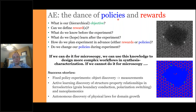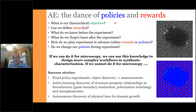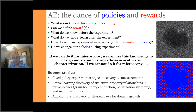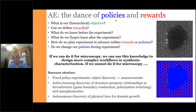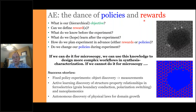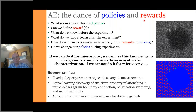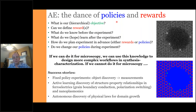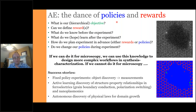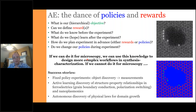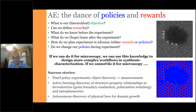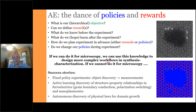Our planning of the automated experiment becomes a dance between policies and rewards. Rewards are what we want to accomplish — how we judge a specific step as successful. Policies are essentially the decision-making rule: what the microscope does based on the current state of the observation. If we can do this type of planning for microscopy, we can use this knowledge for more complex workflows. If we cannot do it for microscopy, we probably don't have a shot at more complex systems either.